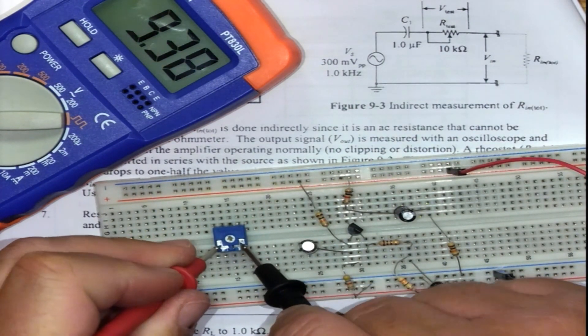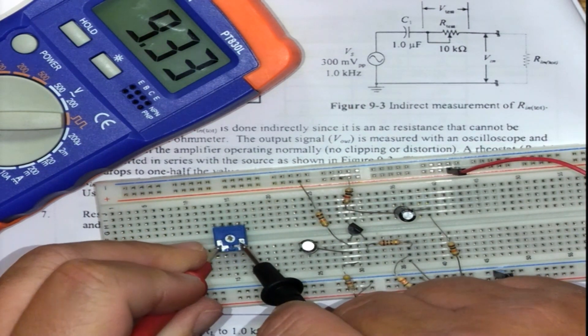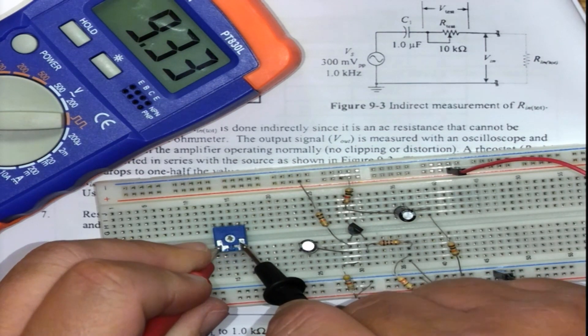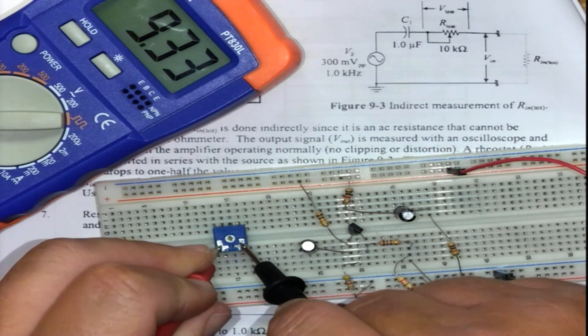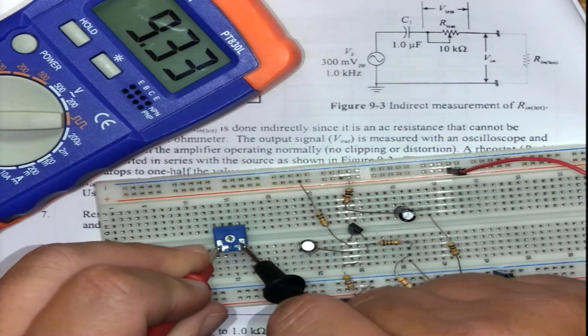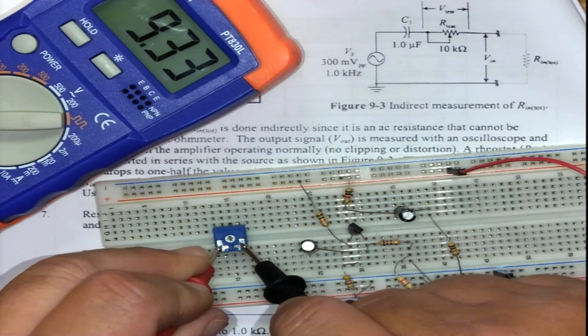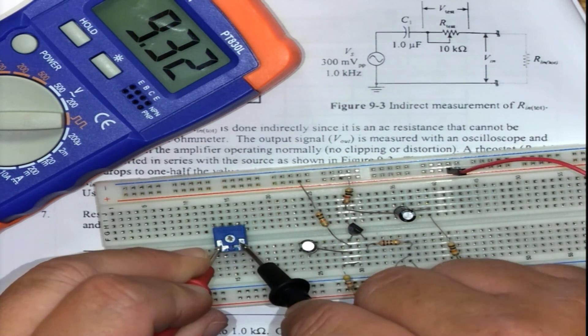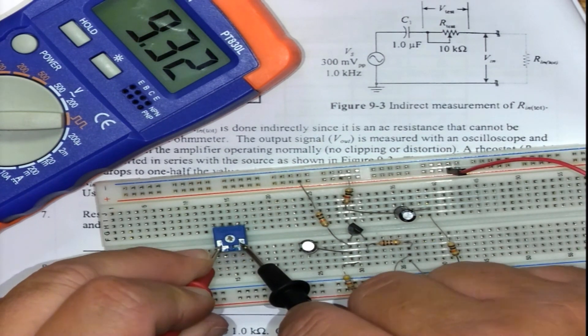I do expect to see something very close to 10 kilo ohms. In this case 9.33. Remember part of your measurements is to say we are measuring like so and such, so this 10 kilo ohm resistor reports 9.33 kilo ohms onto my multimeter.